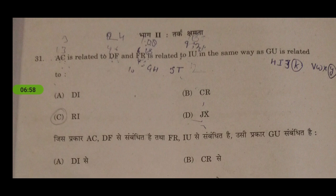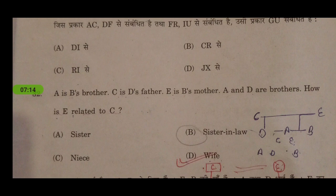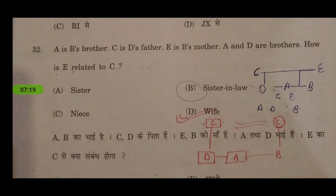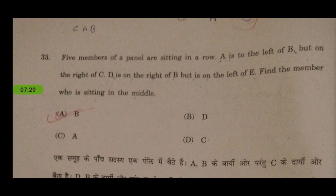The next question — A is the brother of C — is a blood relation question which I have solved here; the answer is wife. The next question: five members of a panel are sitting in a row. A is to the left of B but on the right of C; D is on the right of B but to the left of E. Find the member sitting in the middle. Based on seating arrangement, the answer is B.